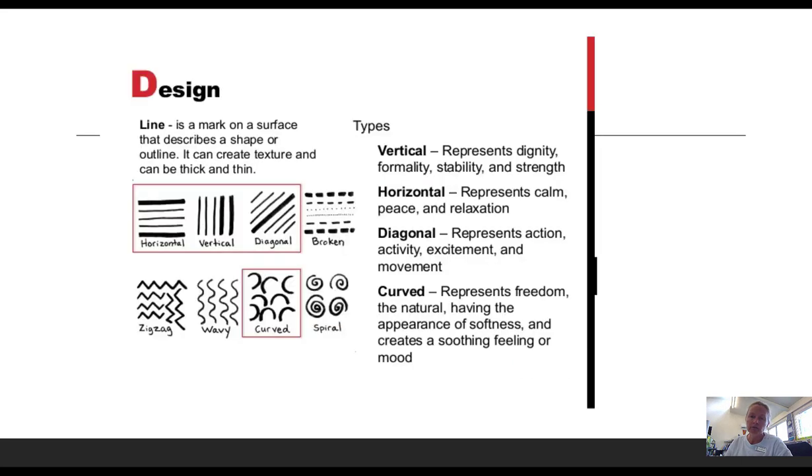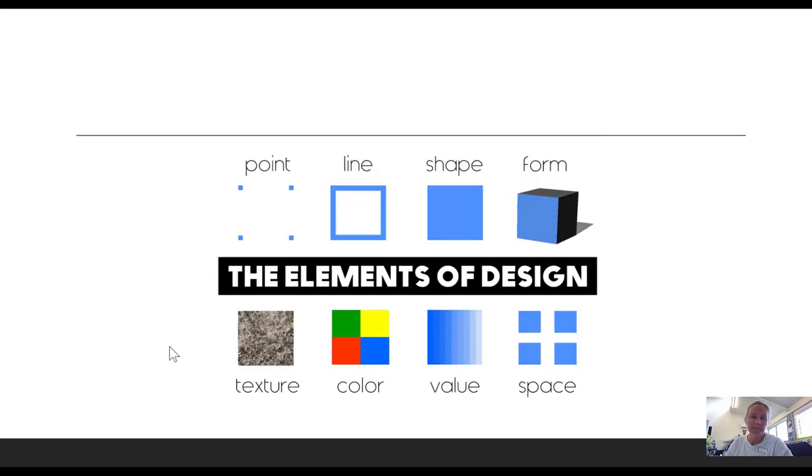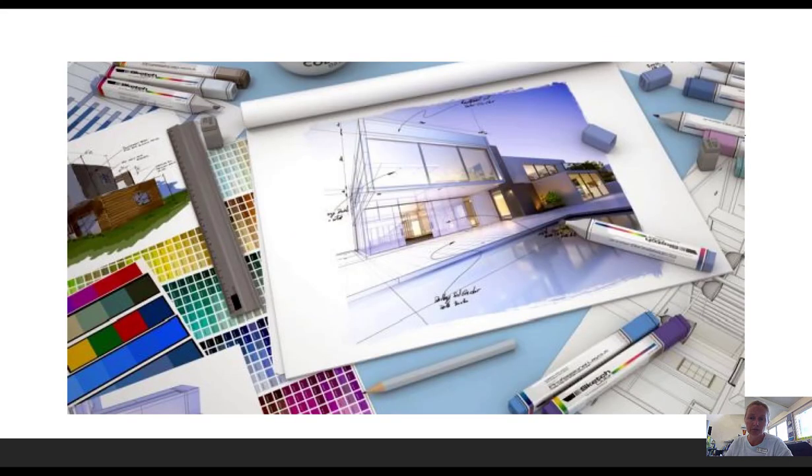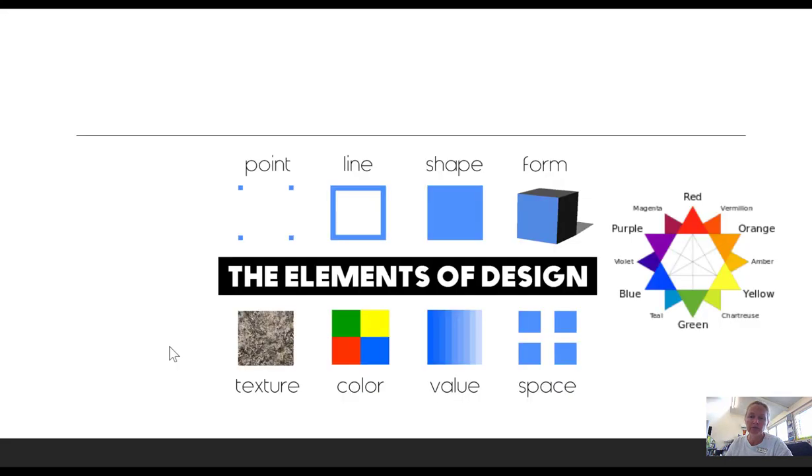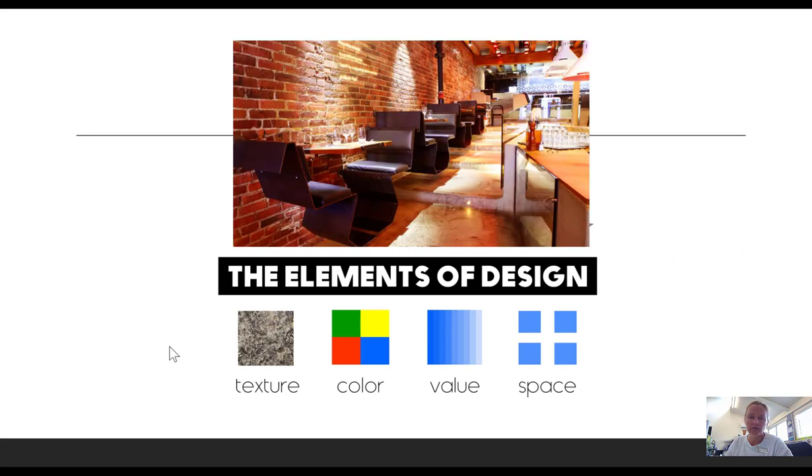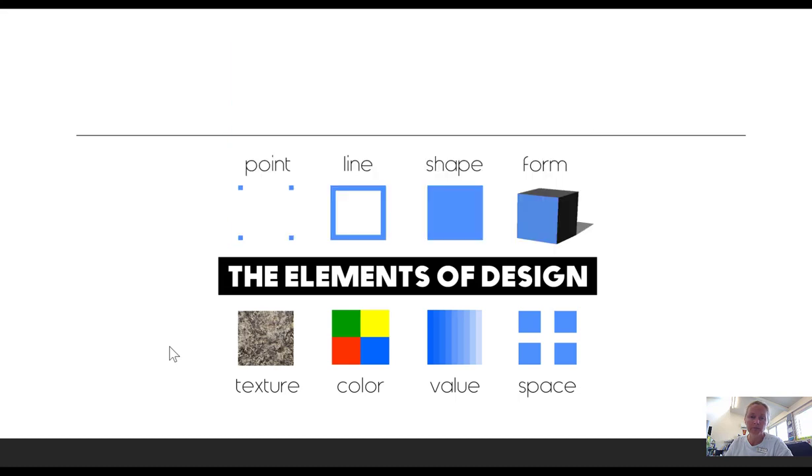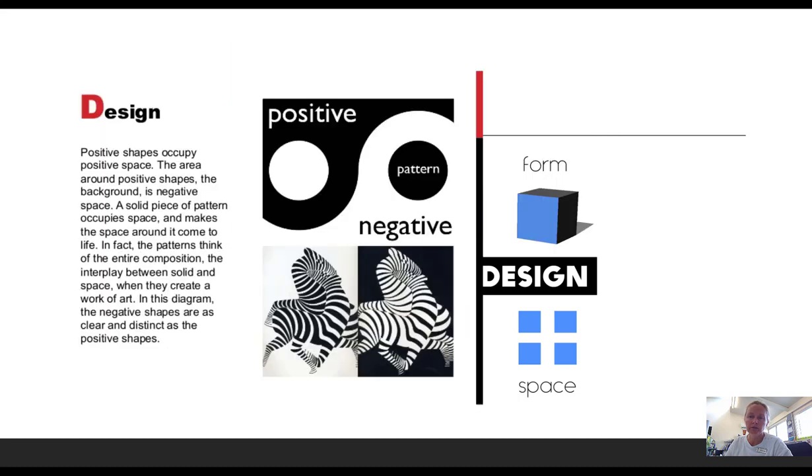A line generally is defined as a mark made by a point, a pointed tool or shape. A shape is a flat enclosed two-dimensional shape. Color is created by light, value, and the degrees of lightness or darkness. Form is a three-dimensional object or form. Texture is defined as the feeling of a surface of an object. Space is the illusion of depth. It can be two-dimensional or three-dimensional and it can be considered as negative or positive.